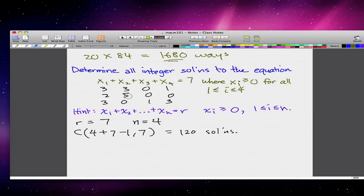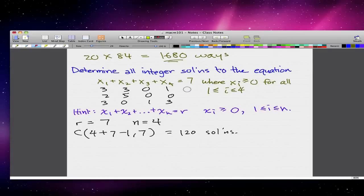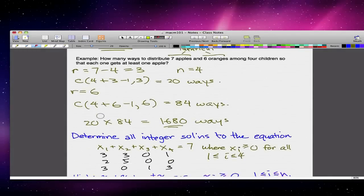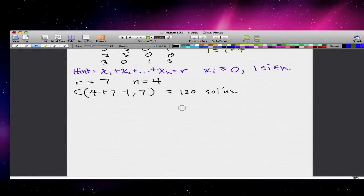And this gives us C(4 plus 7 minus 1, choose 7), which will actually give us 120 solutions. So what we really did is really simple. We found that r is equal to 7 and n is equal to 4. We could just count the n up and r is already given to us. Using our equation, we get 120 solutions.